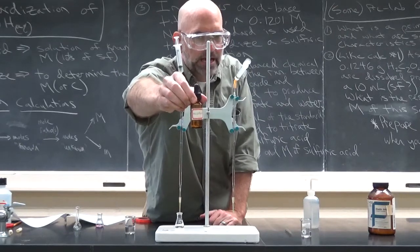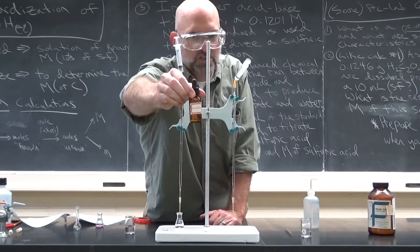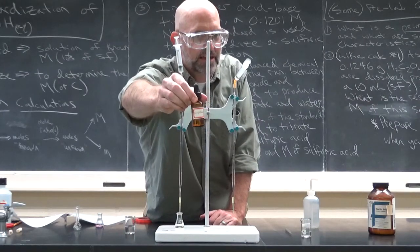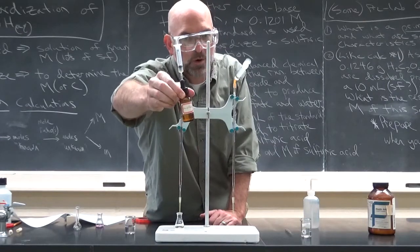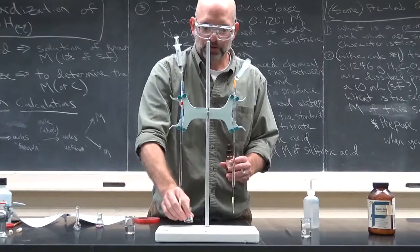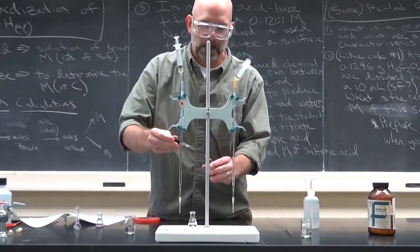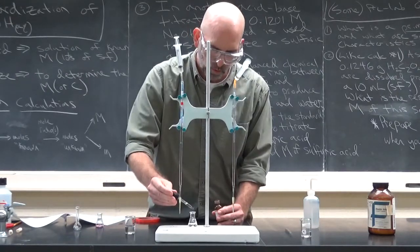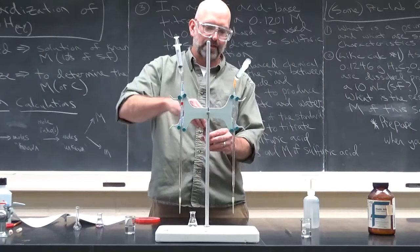Most times we use an indicator that you've done before, and it's a color change. And in this case, we're going to use phenolphthalein. So try to spell that one. And if you Google phenolphthalein, it used to be used in a medicinal product. I'll let you look that up. Maybe you can write that down for a bonus point. I doubt your instructor will give you one, but why not? So make sure that you put a couple of drops.